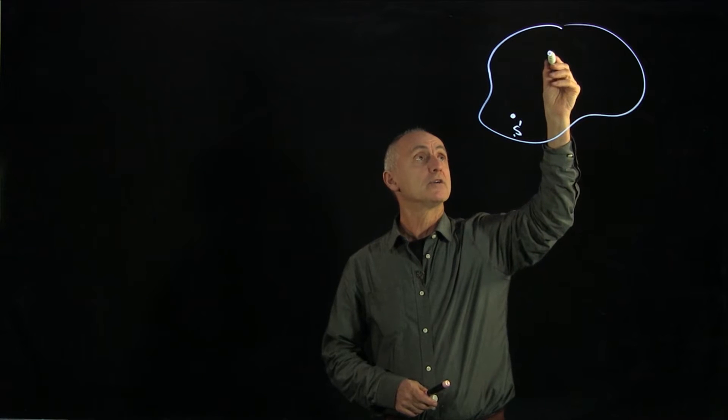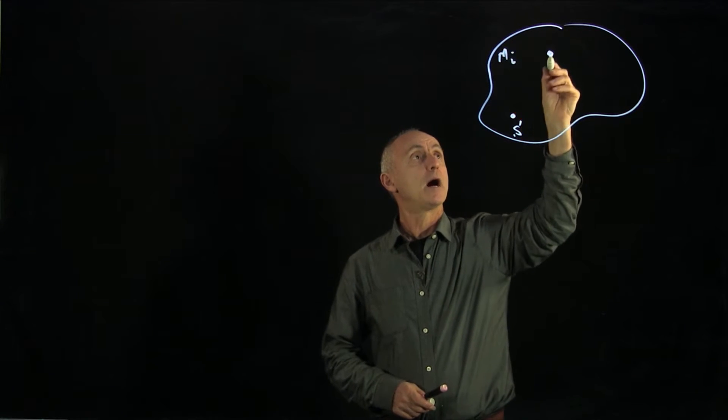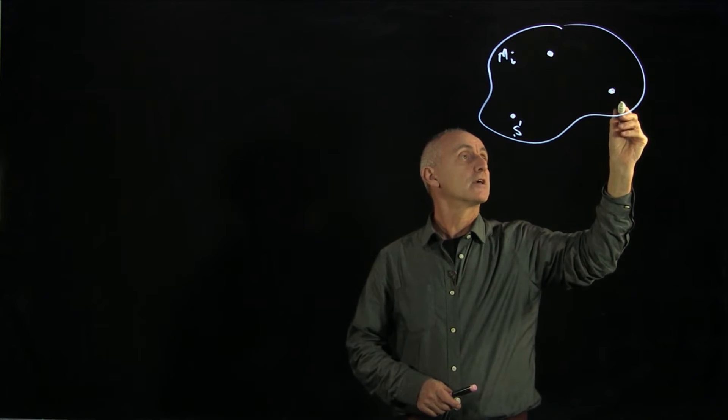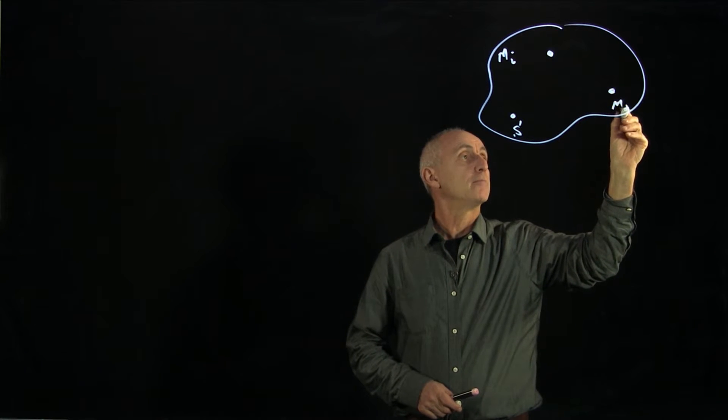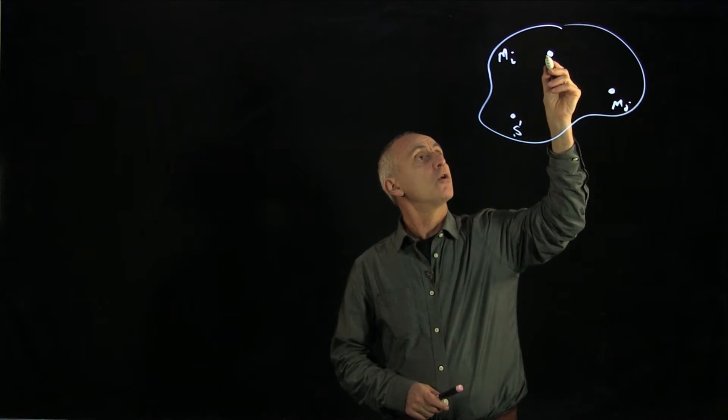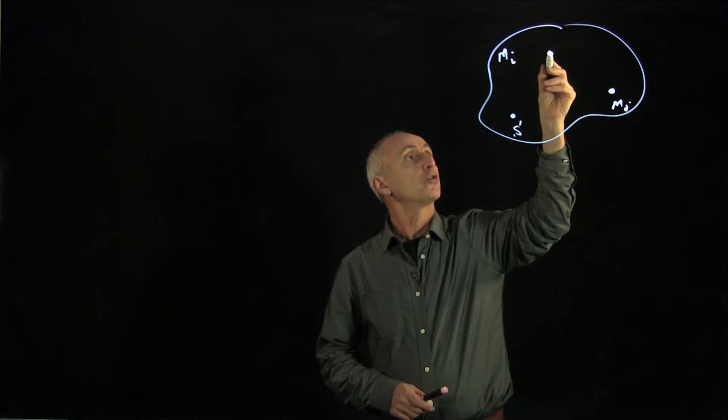The way we'll do that is suppose we pick an object we'll label with mass mi and another object we'll label with mass mj. These are small mass elements in the body, and we'd like to know something about the internal forces.